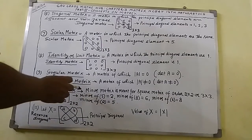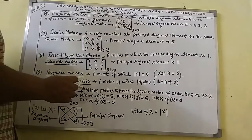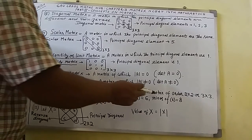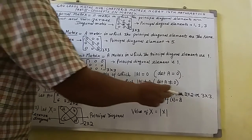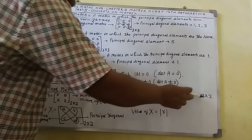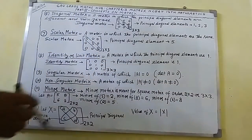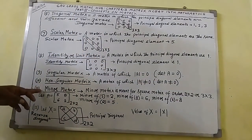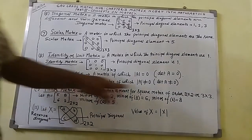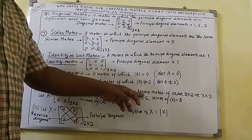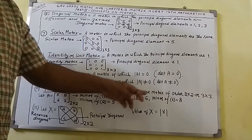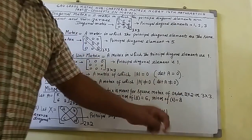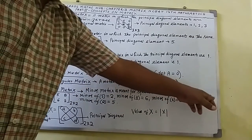Point number 11: minor matrix. Minor matrix applies to a square matrix of order 2 by 2 or 3 by 3. For the minor matrix, you will take only a square matrix of order 2 by 2 or order 3 by 3.